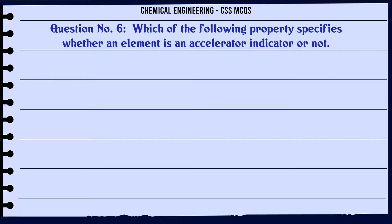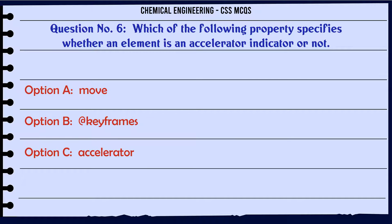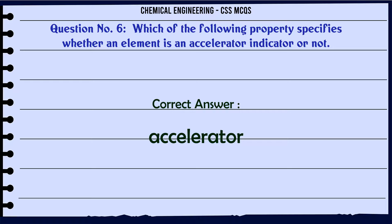Which of the following property specifies whether an element is an accelerator indicator or not? A. Move. B. Keyframes. C. Accelerator. D. None of the mentioned. The correct answer is: Accelerator.